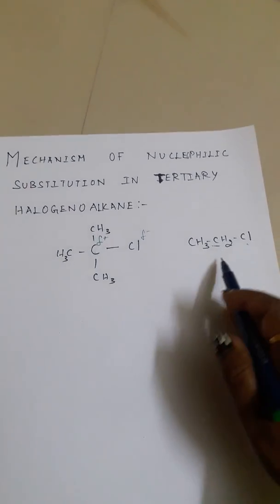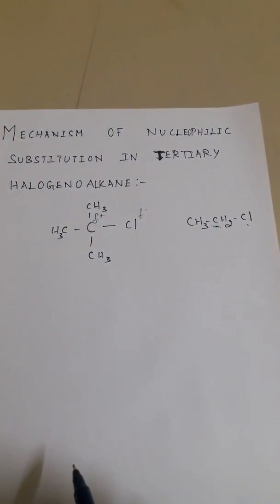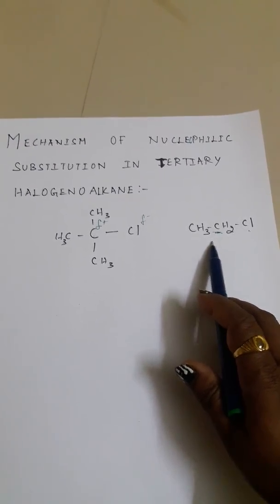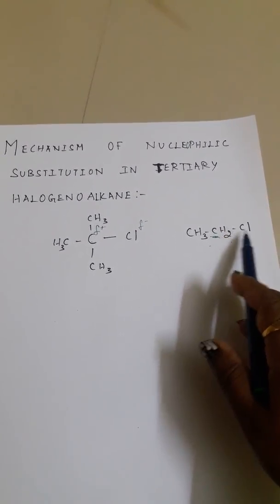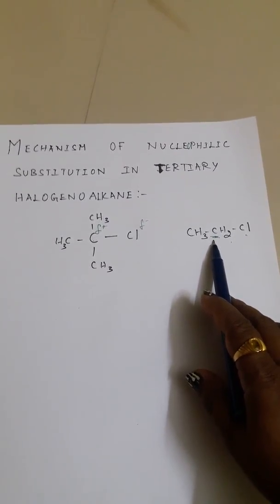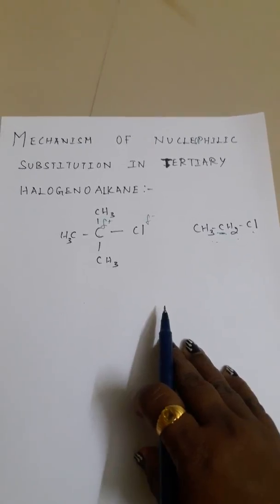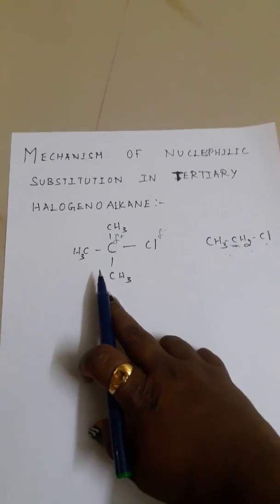If you take chloroethane, which is primary, nucleophilic substitution will be easy. Chlorine will remove from the ethane group and hydroxyl can react with the ethyl group.